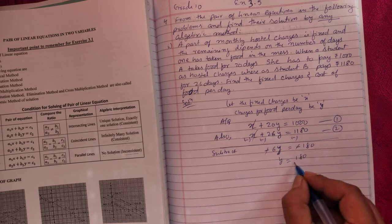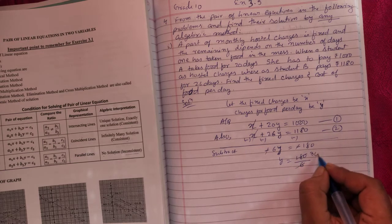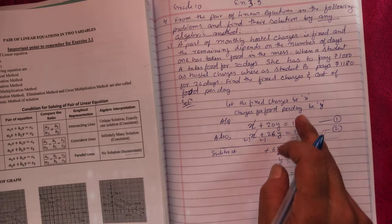Minus cancels, so y is 180 by 6. 6 times 30 is 180, so y is 30. So we got y. We can find x by putting it in equation one or two.